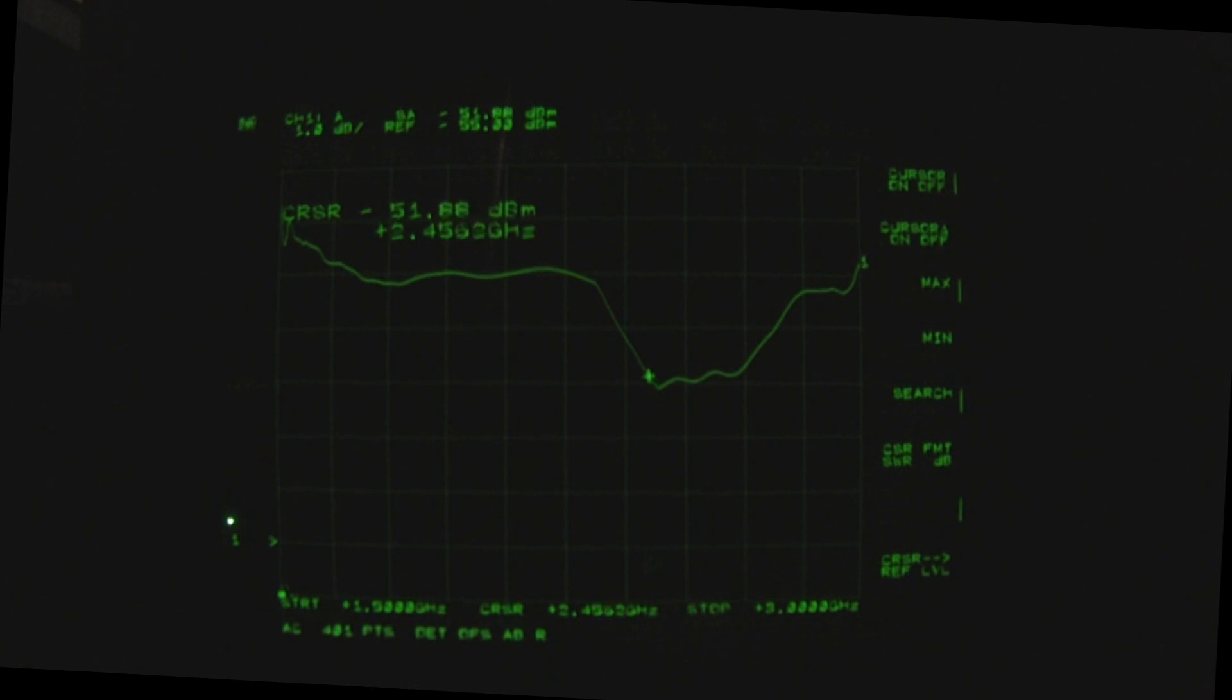For 2.4 gigahertz Wi-Fi, this monopole is virtually spot on. You can see 2.42, 2.41 going down there, 2.47, and then it's quite wide until it starts going back up again at around 2.5 gigahertz.